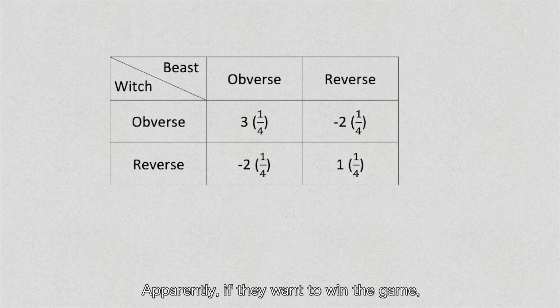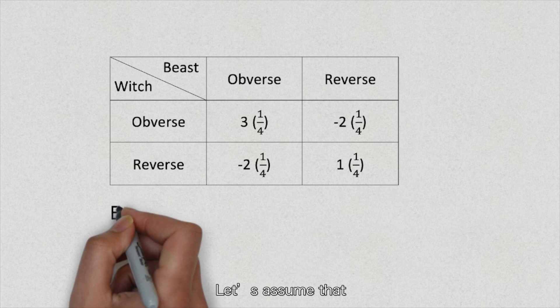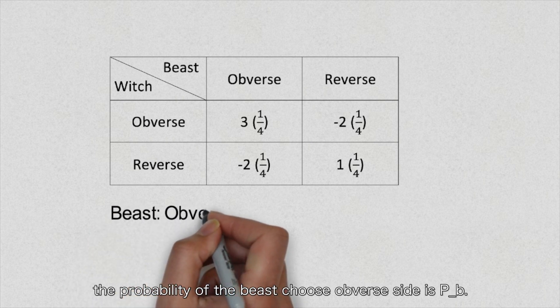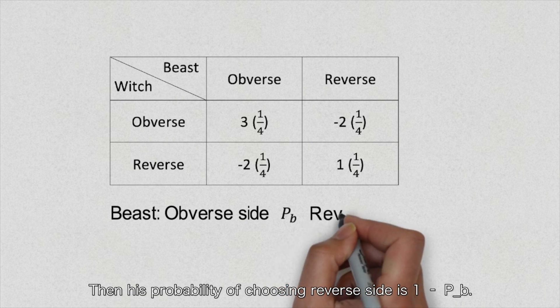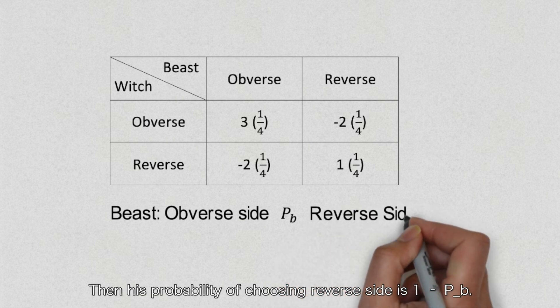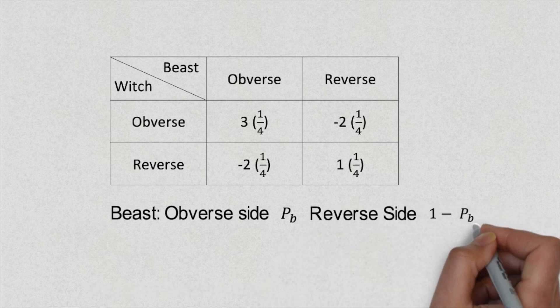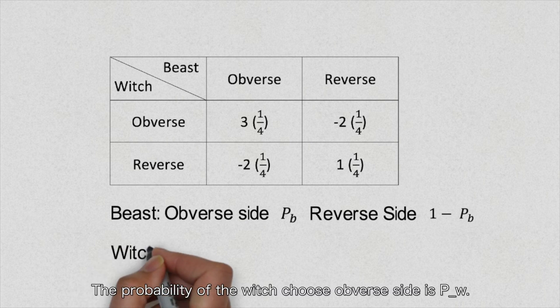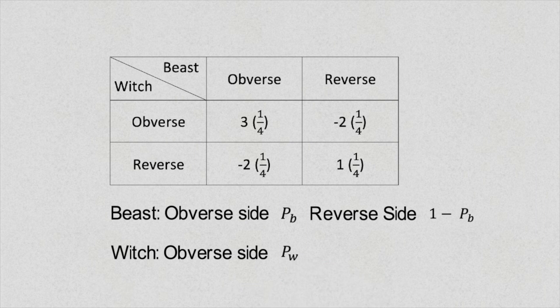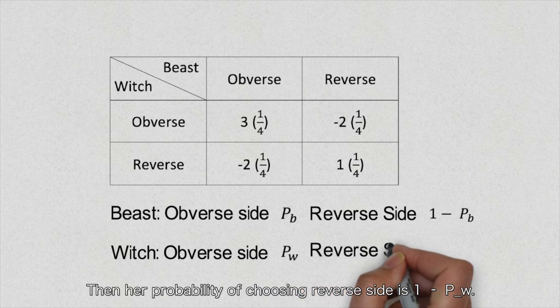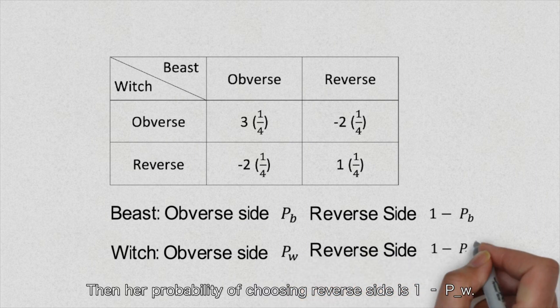Apparently, if they want to win the game, they cannot always choose one side of the coin. Let's assume that the probability of the beast choosing obverse side is P_b. Then his probability of choosing the reverse side is 1 minus P_b. Same for the witch. The probability of the witch choosing obverse side is P_w. Then her probability of choosing reverse side is 1 minus P_w.